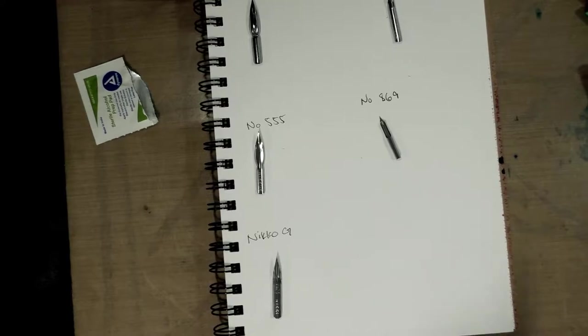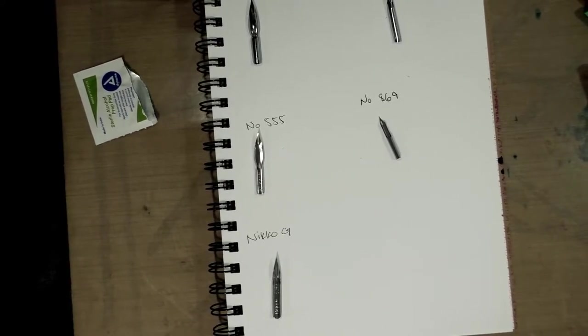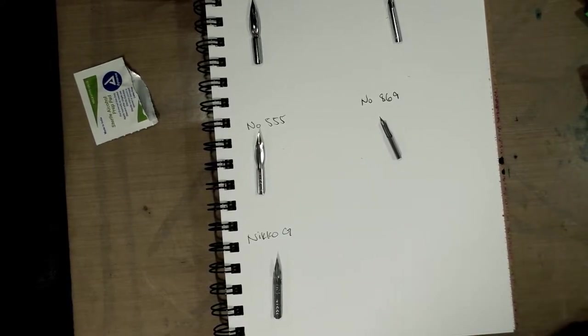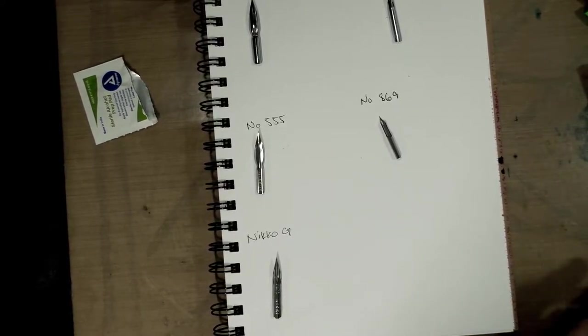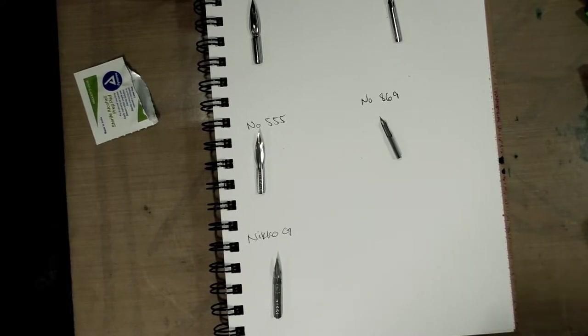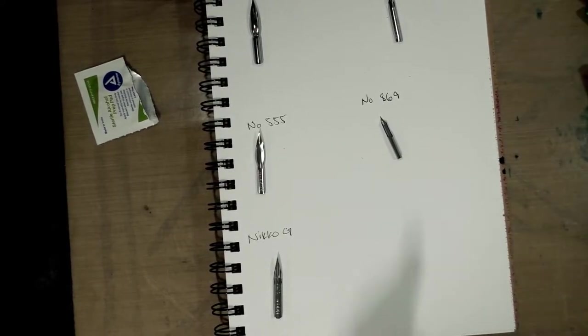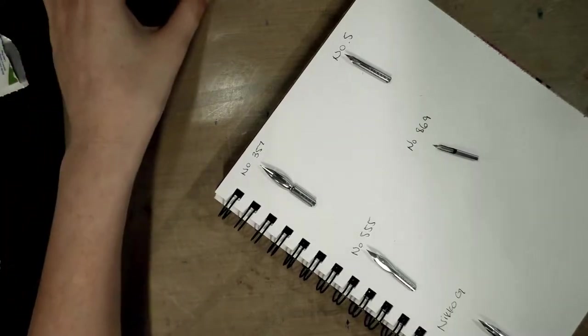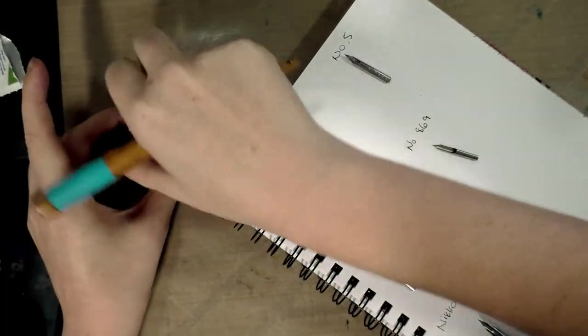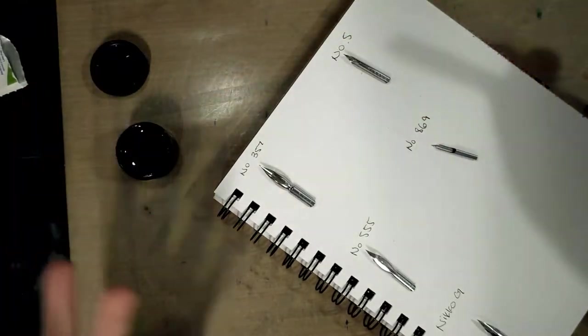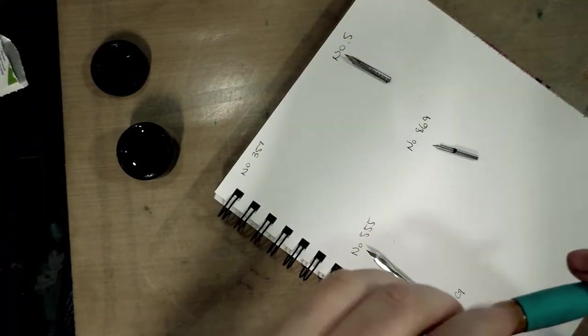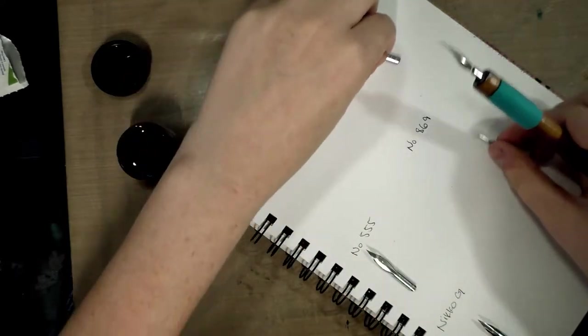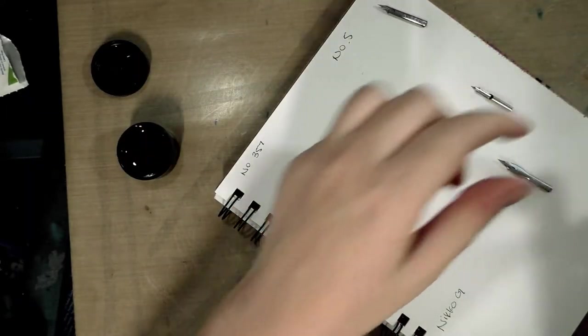All right, let us grab, lettuce like the leafy green, lettuce grab our nib holders, and I would hope a Tachikawa holder or a Kuretake holder would work with these. And we're going to do our testing with Daler FW acrylic ink, which is what I've been using for our other tests.